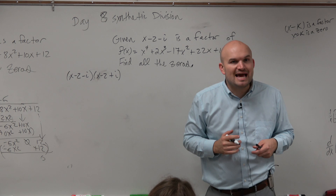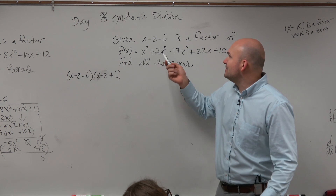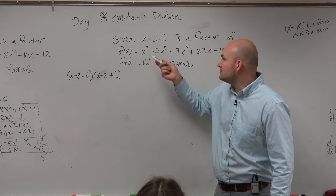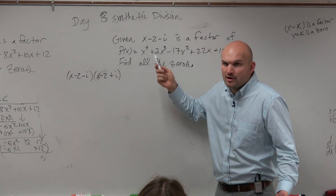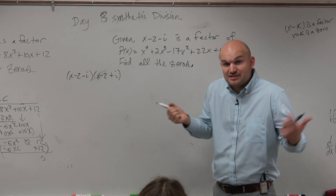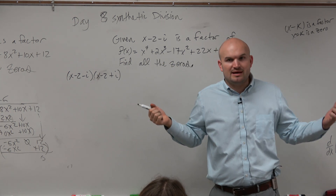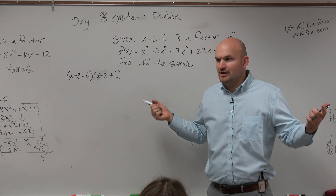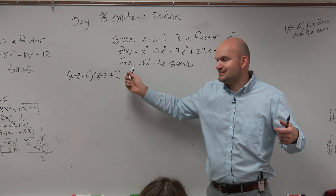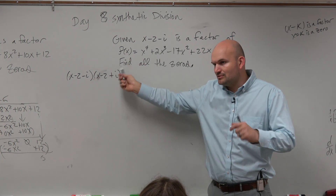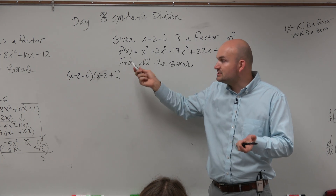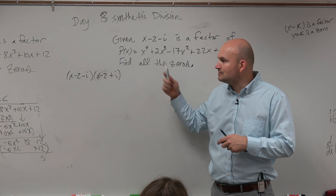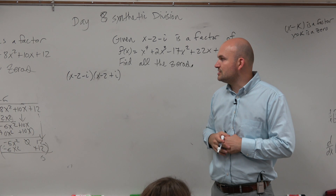I've got two zeros down. How many zeros am I supposed to have total? Four. Okay, cool — I just found two. That wasn't that bad. I could easily just set those equal to zero and solve.